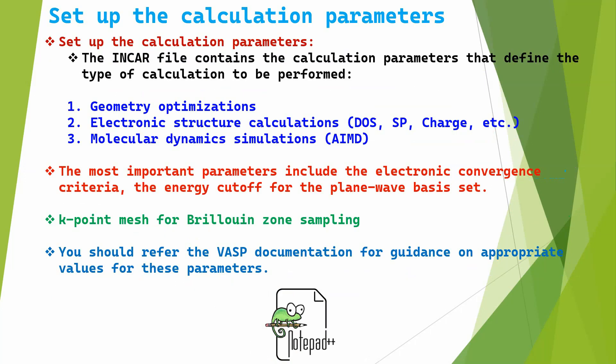Now we can see how to set up the calculation parameters. The INCAR file contains the calculation parameters that define the types of calculation to be performed. The first type is geometry optimization, the second is electronic structure calculations such as DOS, single point energy, charge density, and band structure.